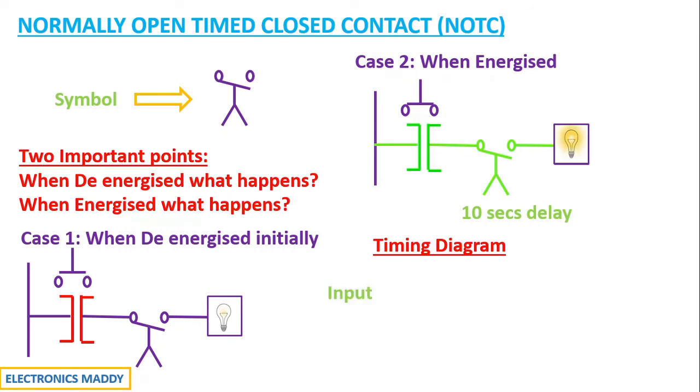Let us say we have an input. This is the input that we have used. This is the input switch that we have used. Initially it is low.